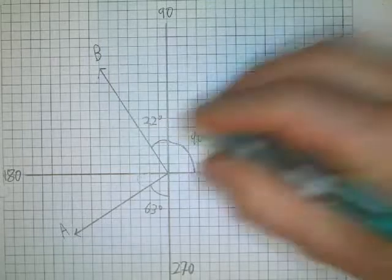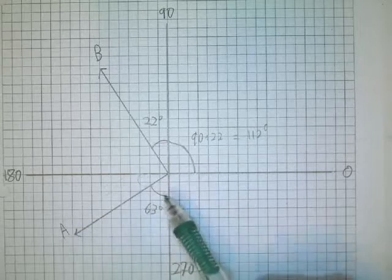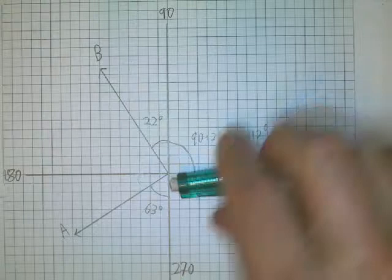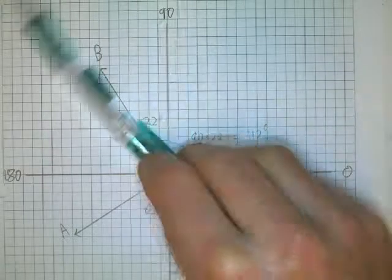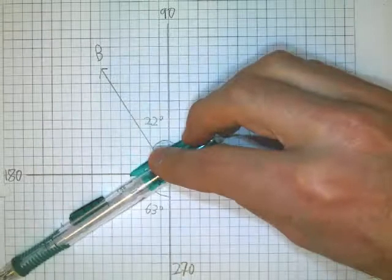And then this guy down here, notice that this guy is not quite to 270. So it's 90, 180, not quite 270, it's actually 63 degrees short of 270.